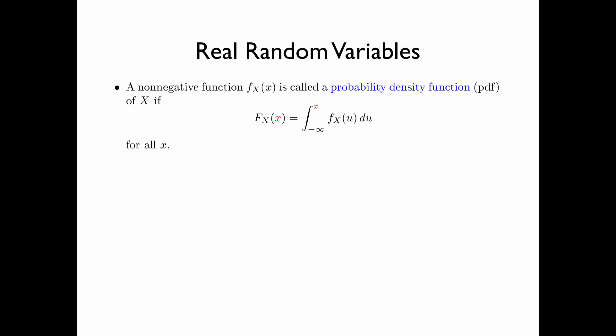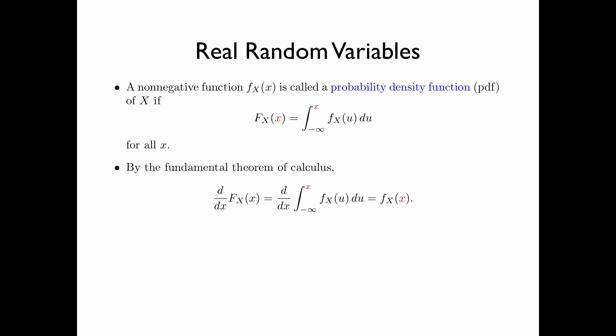A non-negative function f(x) is called a probability density function, or PDF, of the random variable x, if by integrating this function from minus infinity to x, it is exactly equal to the value of the CDF evaluated at x, for all values of x. By the fundamental theorem of calculus, the derivative of the CDF with respect to x — dF/dx — equals the integral of f(u) du from minus infinity to x, which equals f(x). In other words, the PDF of a random variable x is equal to the derivative of the CDF of x.